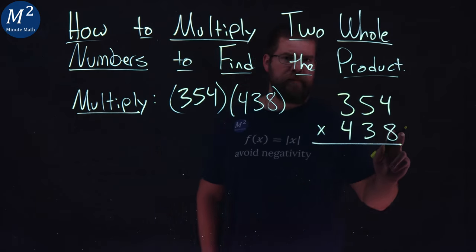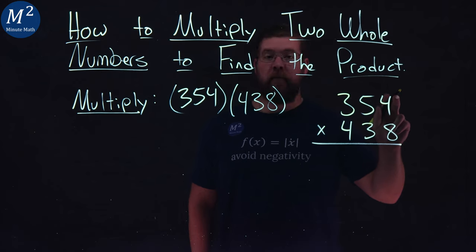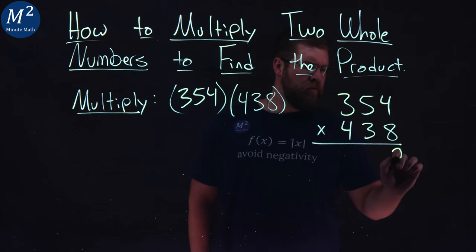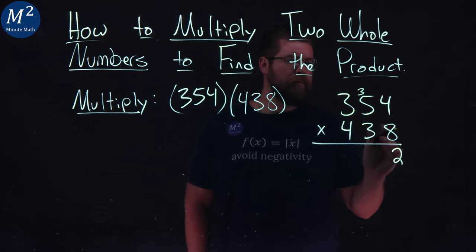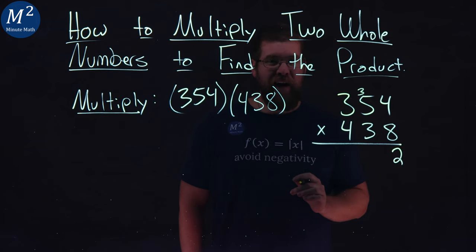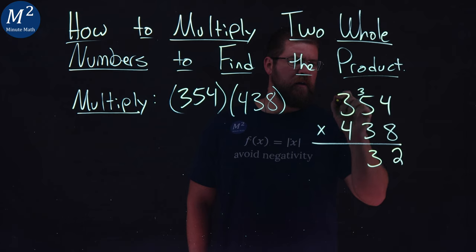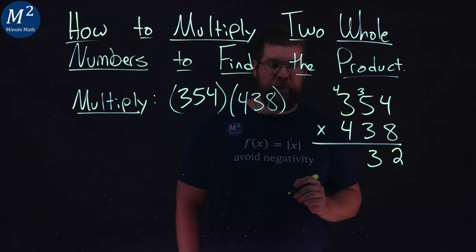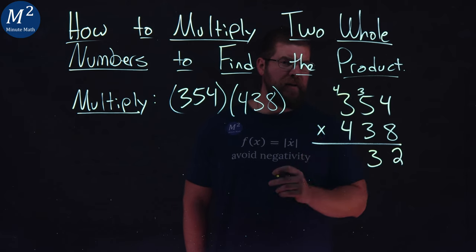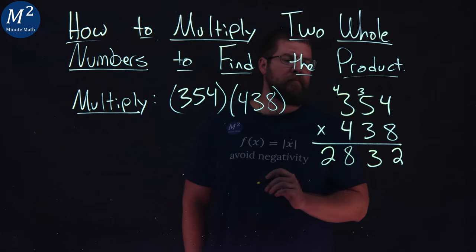Start with the ones place here. Like always, 8 times 4 is 32. Put a 2 here, carry the 3. 8 times 5 is 40, plus 3 is 43. Put down 3, carry the 4. 8 times 3 is 24. We add 4 to that and we get 28 right there.